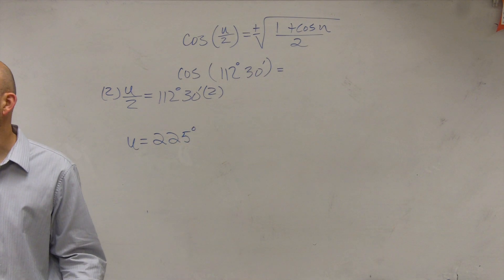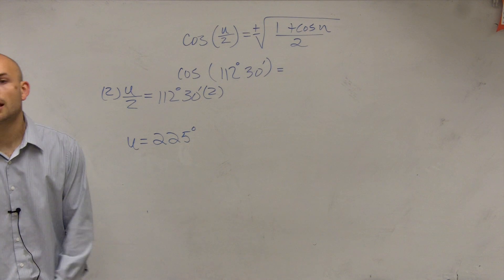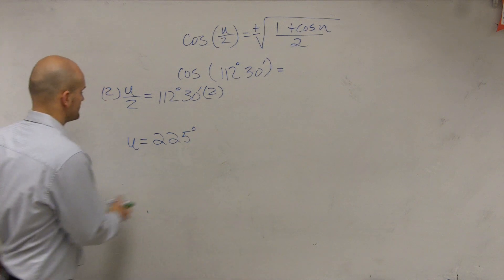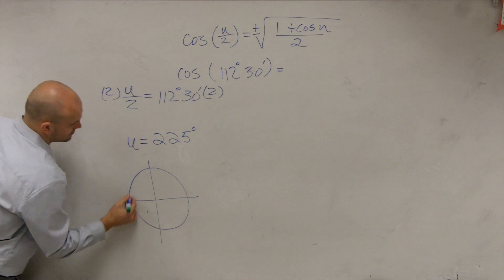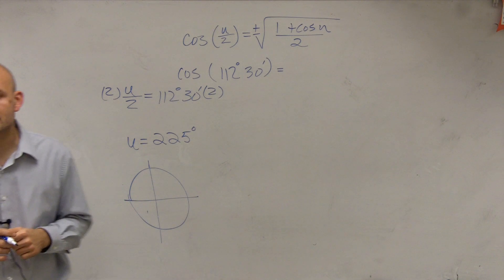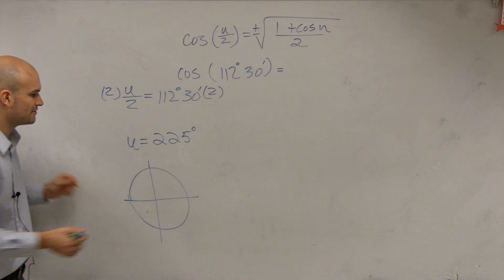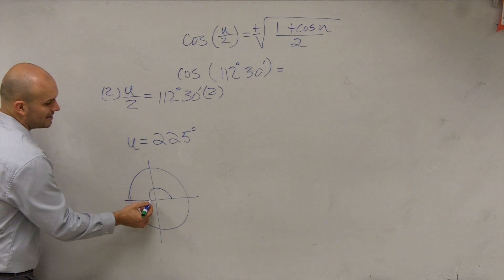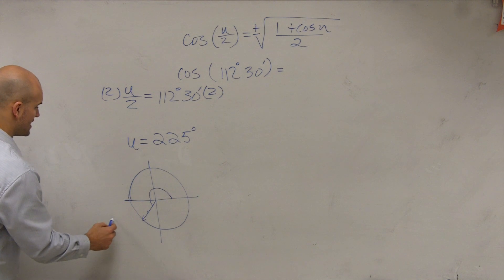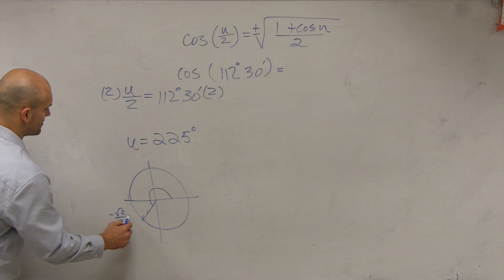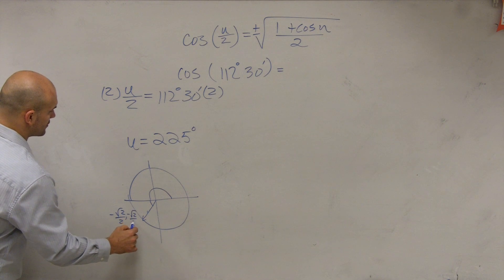Now, can we evaluate for 225 degrees? Yes, we can. So we go and look at 225 degrees. We know that's going to be 180 plus 45. So the point there is going to be a negative square root of 2 over 2, comma, a negative square root of 2 over 2.